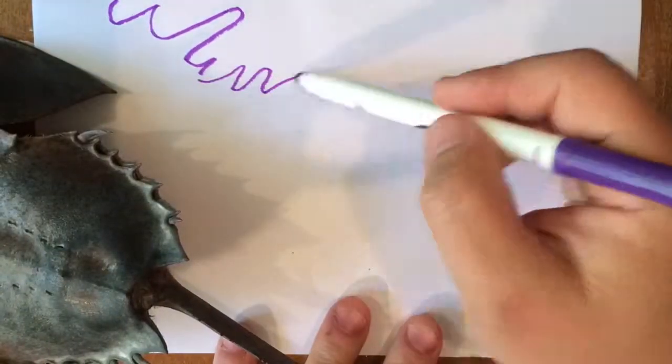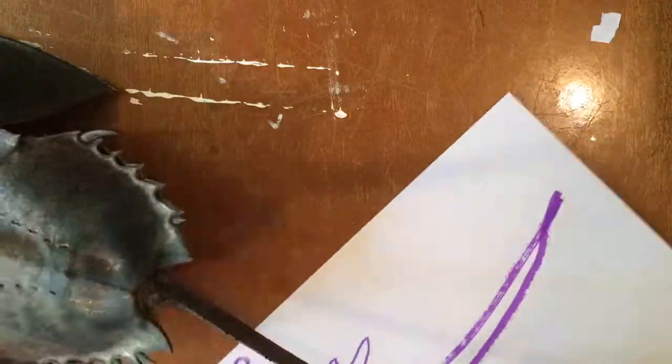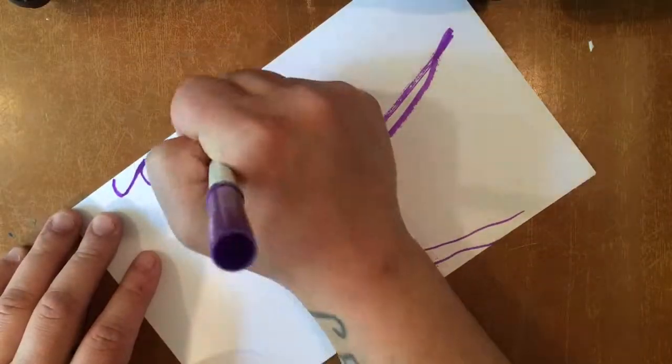I've always had a fascination with horseshoe crabs. To me, they just look like this bug from another planet. That tail is just so weird.